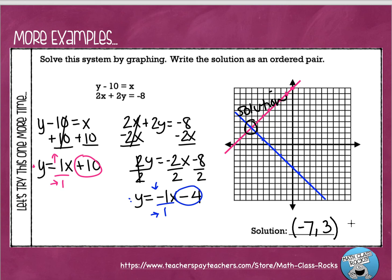That means if you take x equals negative 7 and y equals 3 and plug those values into both equations, they would both be true — that's how you check your answer. Hopefully this is helpful. If you need to watch the video again, I'd recommend it. If you have any questions, reach out to a classmate or your teacher. Thanks, I'll see you next time.